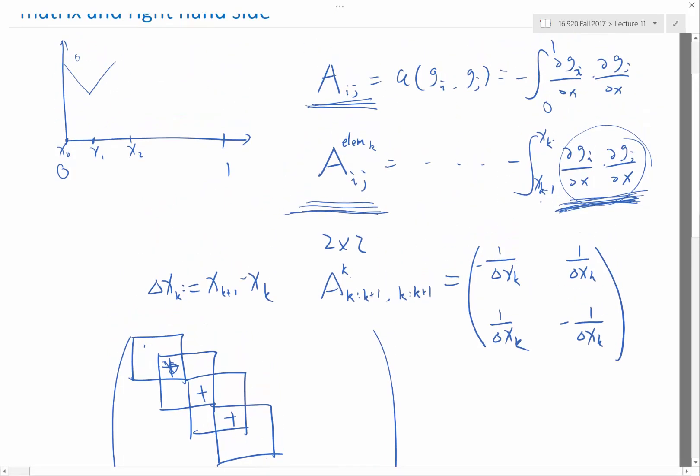So this is looking at the matrix in a particular element, element k. Element 0 would be here, element 1 would be here, and element 2 would be here. If you decompose the integral from 0 to 1 into an integral over all the elements, you get the summation over the smaller matrices.